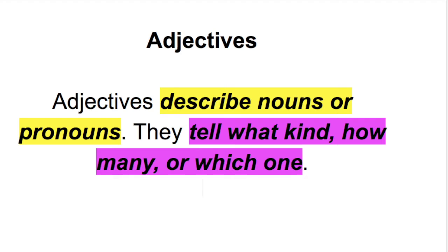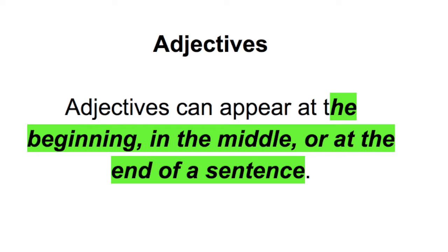Let's look at the first rule of adjectives. Adjectives describe nouns or pronouns. They tell what kind, which one, or how many. The second rule: adjectives can appear at the beginning, in the middle, or at the end of a sentence.